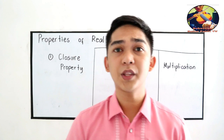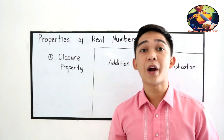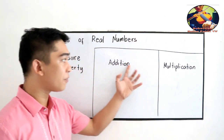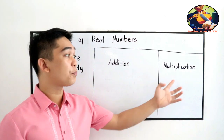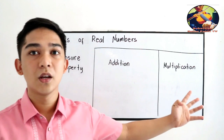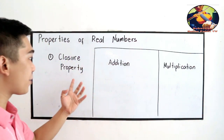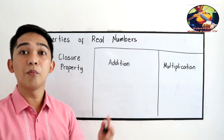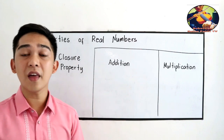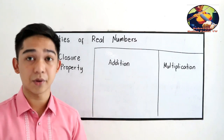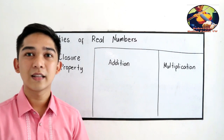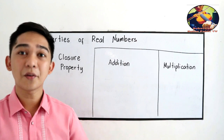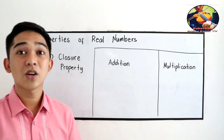Let's start with the closure property. We have the closure property of addition and the closure property of multiplication. The closure property states that if you're going to add or multiply two real numbers, then the sum or product will also be a real number.